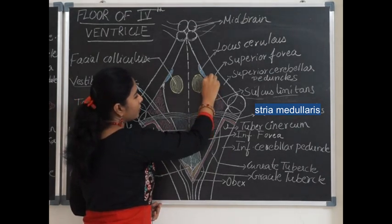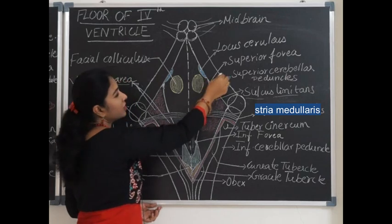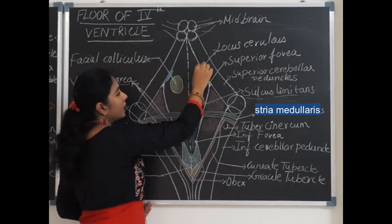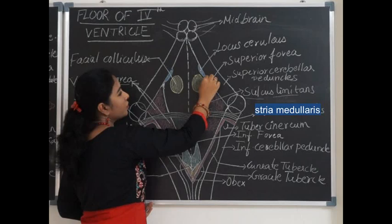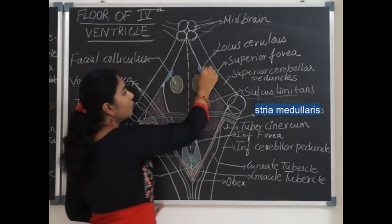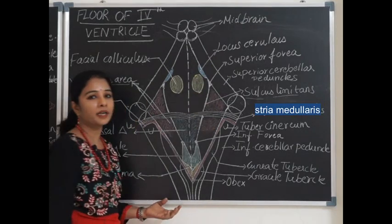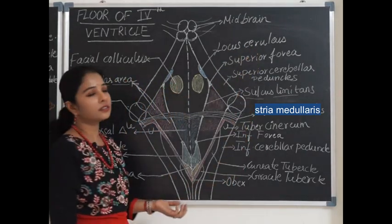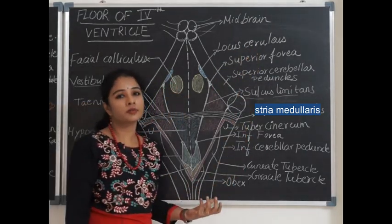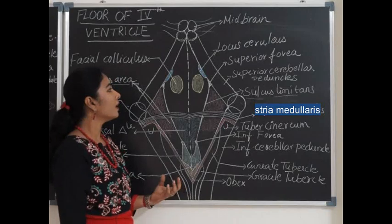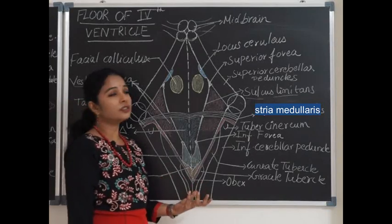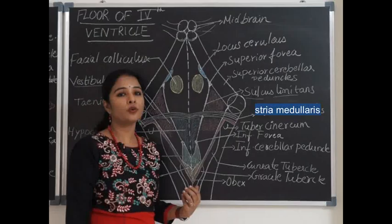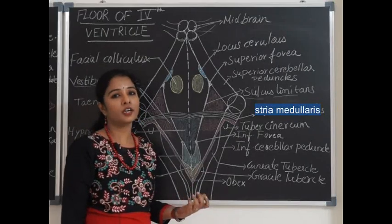Tracing the sulcus limitans superiorly, it ends in a small triangular depression called the superior fovea. Just medial and superior to the superior fovea there is a bluish-colored pigmented area called the locus ceruleus, also called substantia ferruginea. It consists of neurons that produce norepinephrine and noradrenaline as neurotransmitters.